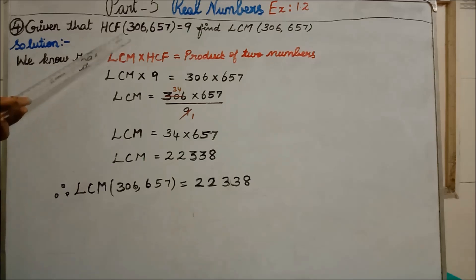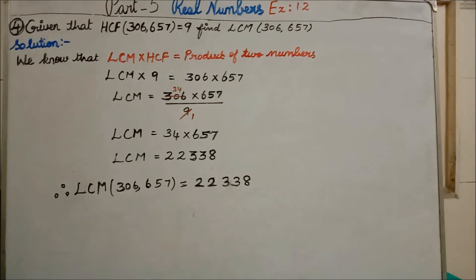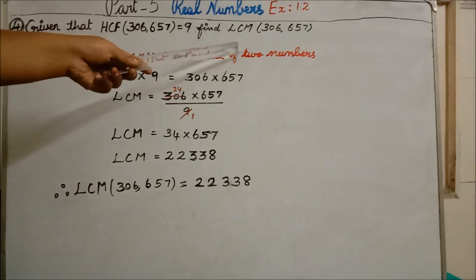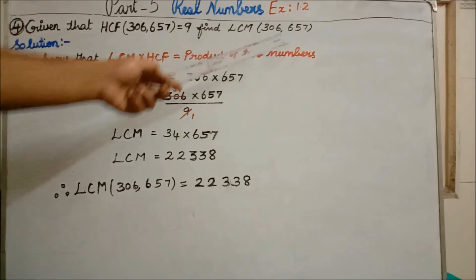Given that HCF(306, 657) = 9. Find LCM(306, 657). What the question is saying: they have given the HCF value and they are asking us to find the LCM. We know that LCM × HCF = product of the two numbers. LCM we don't know because they are asking us to find it. Both numbers in the expression are 306 and 657.